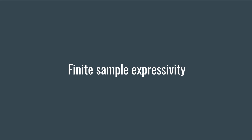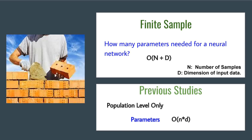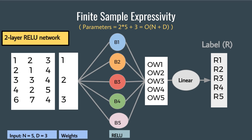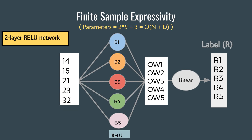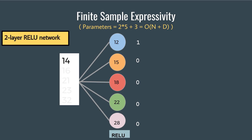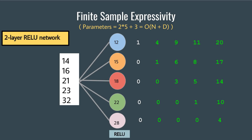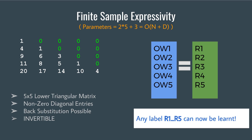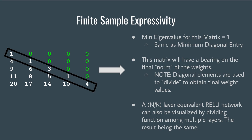They then explored the finite sample expressivity of deep networks and found that a neural net with weight complexity of O(n + d) — where n is the number of samples and d is the input dimension — is sufficient to memorize a finite sample of n entries. Consider a 2-layer ReLU network with an input of 5 entries and input dimension of 3. Given weights 1, 2, 3, the input matrix transforms into a vector. Choosing ReLU thresholds interleaved with vector values, the first vector component will result in a ReLU output, and with all vector components the ReLU output forms an invertible triangular matrix. This proves that 2×5 + 3 parameters can memorize any labeling, and the diagonal entries of this matrix bound the norm of the final weight.